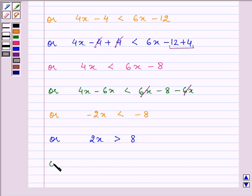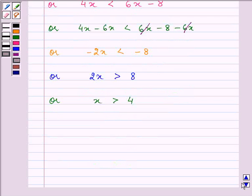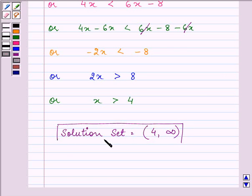Dividing both sides by 2 becomes x is greater than 4. Hence the solution set for real values of x are in an open interval (4, infinity), since x is greater than 4. So this completes the question. Bye for now.